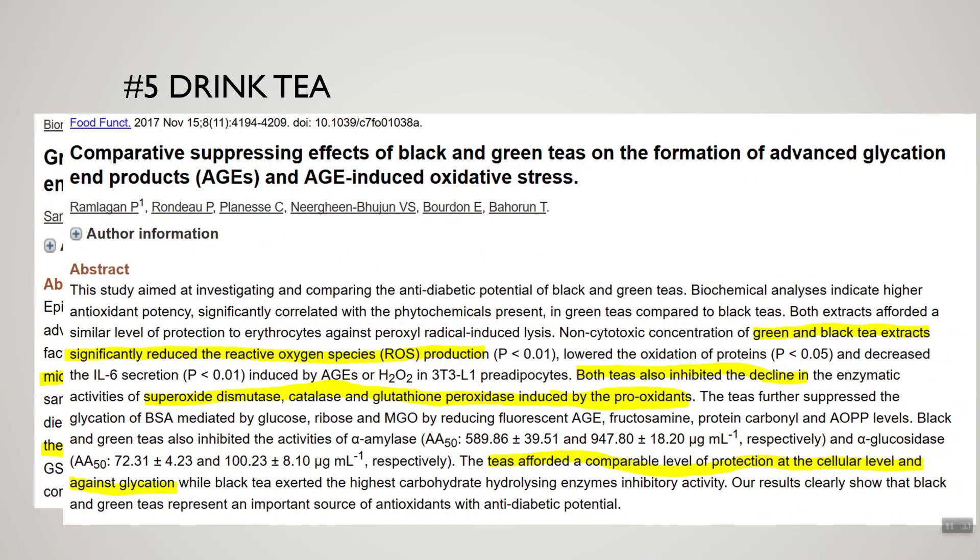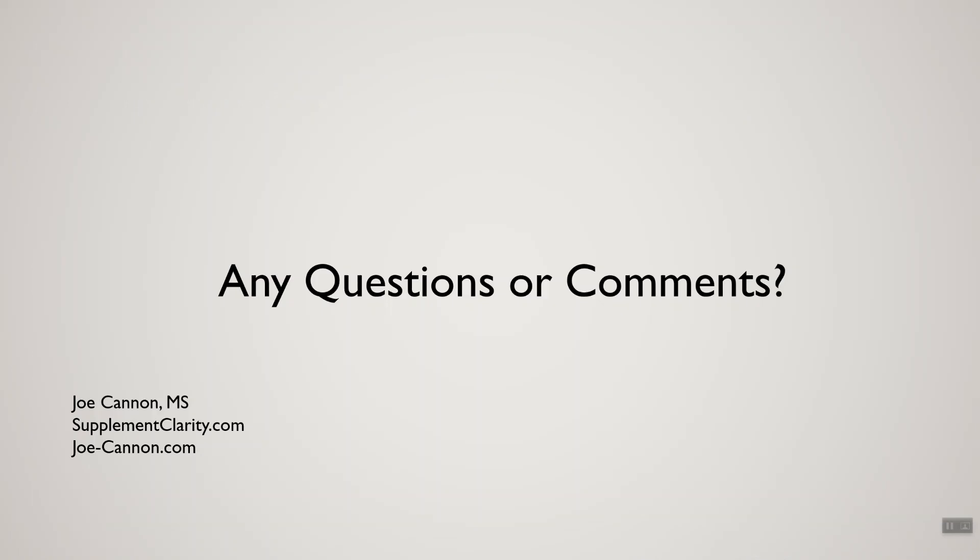So those are the top five ways to neutralize advanced glycation end product production. If you have a comment or a question, leave them below and I'll be happy to answer. Until next time, I'm Joe Canon — take care out there.